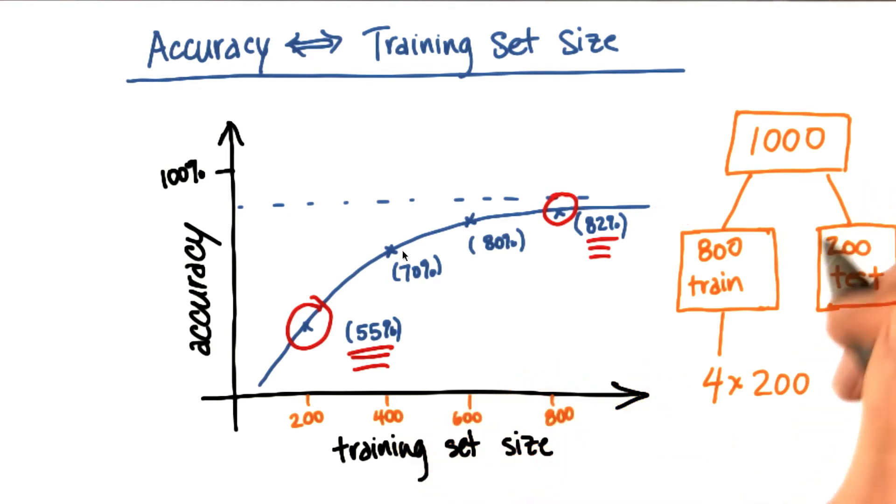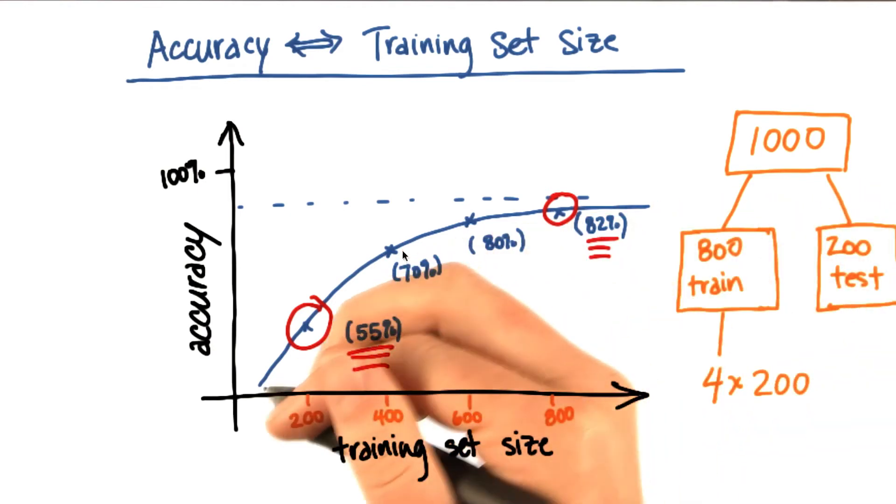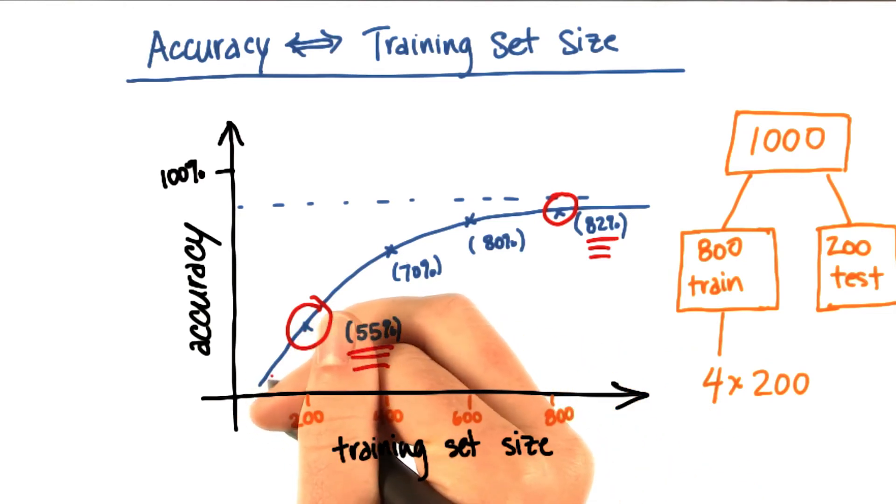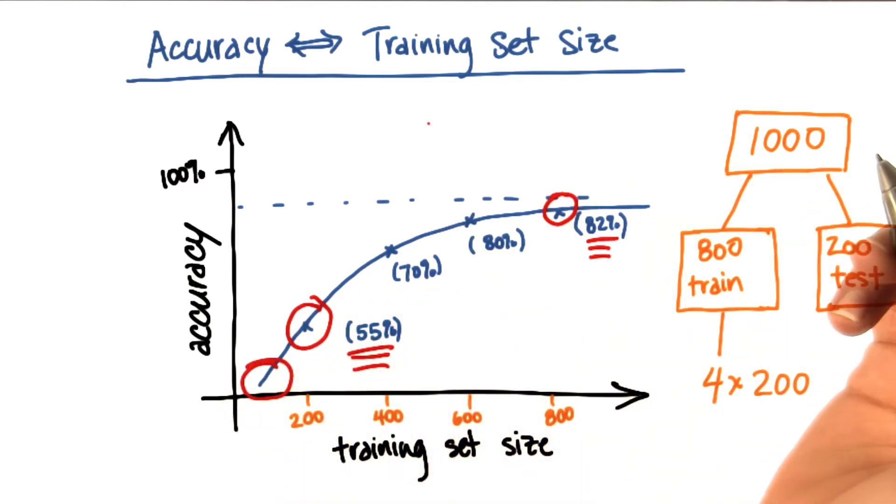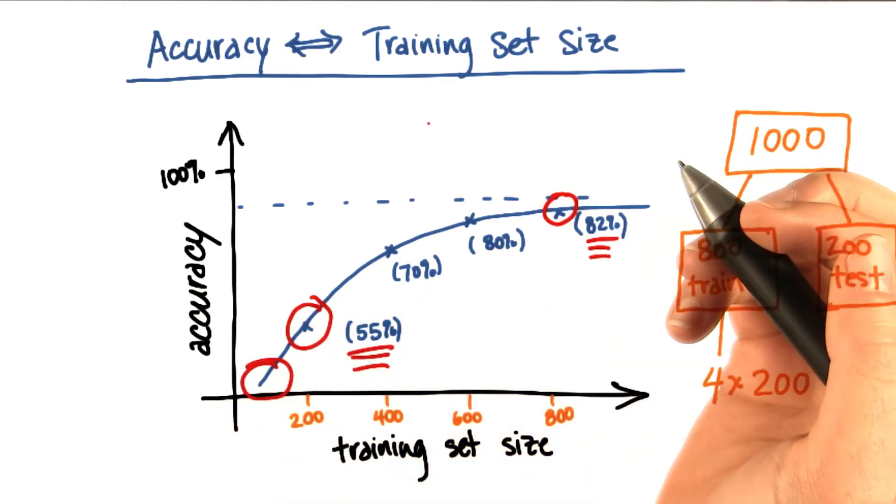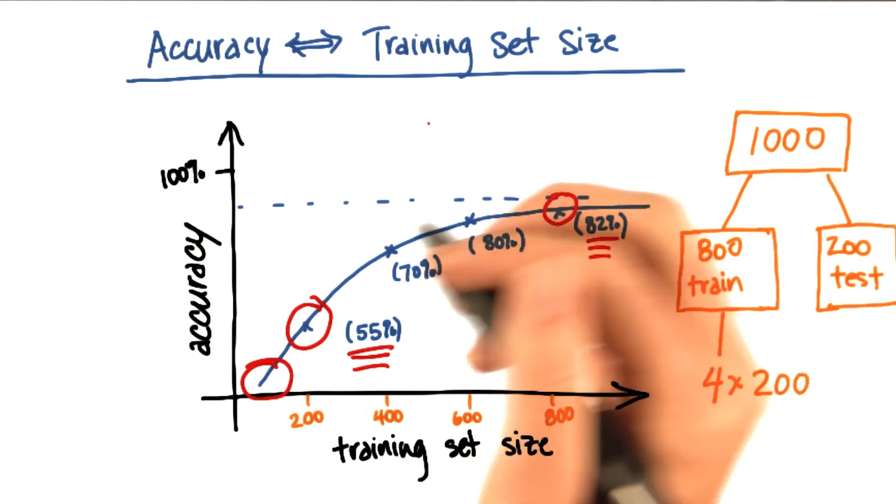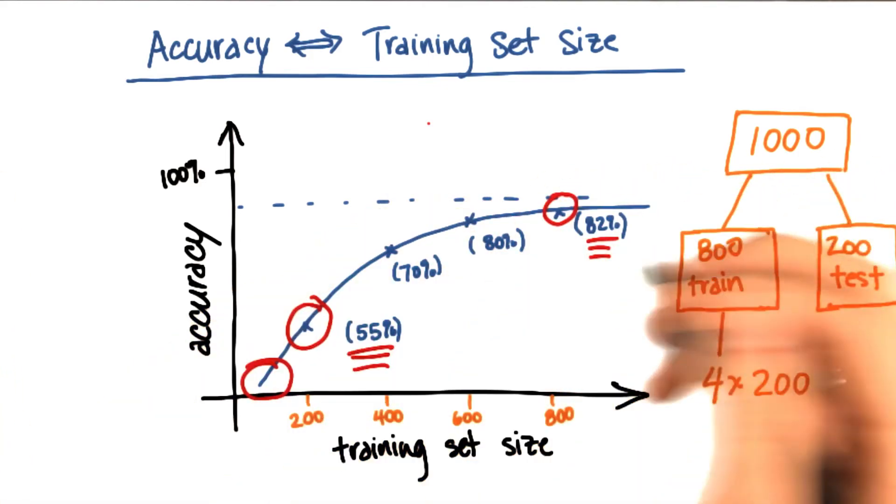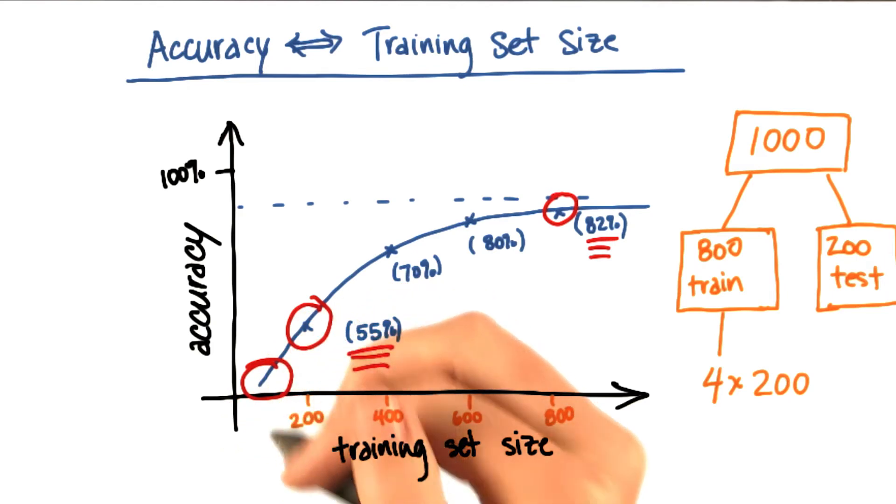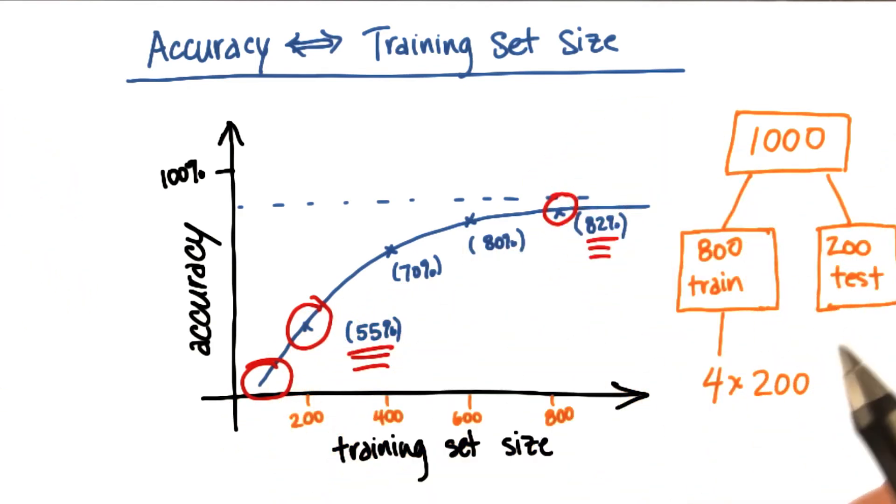And so one of my concerns when trying to identify persons of interest is whether we'd be all the way down here, that we would have so few examples of persons of interest, especially relative to how many completely innocent people are in our data set, that it's very hard to distinguish the patterns that set apart the persons of interest.